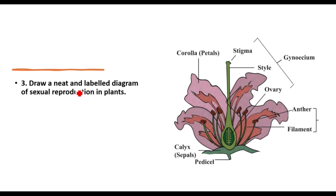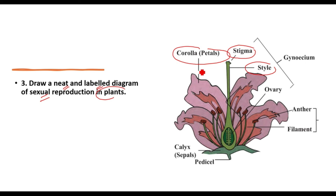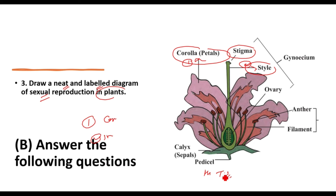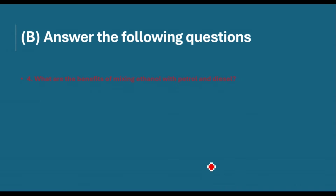Question: Draw a neat and labelled diagram of sexual reproduction in a plant. Draw the diagram properly with at least four labels. Use proper arrows for labelling, or number the parts (1, 2, etc.) and list them — e.g., number 1 is corolla, number 2 is style. For extra information, you can write 'TS of a hibiscus flower' or name the plant. This adds additional detail.